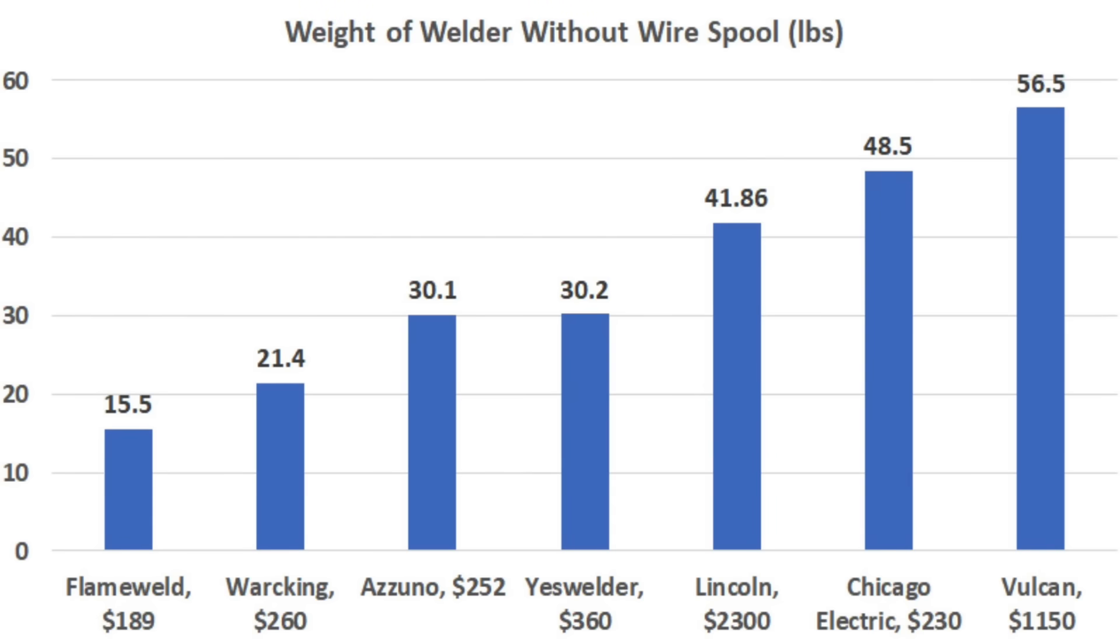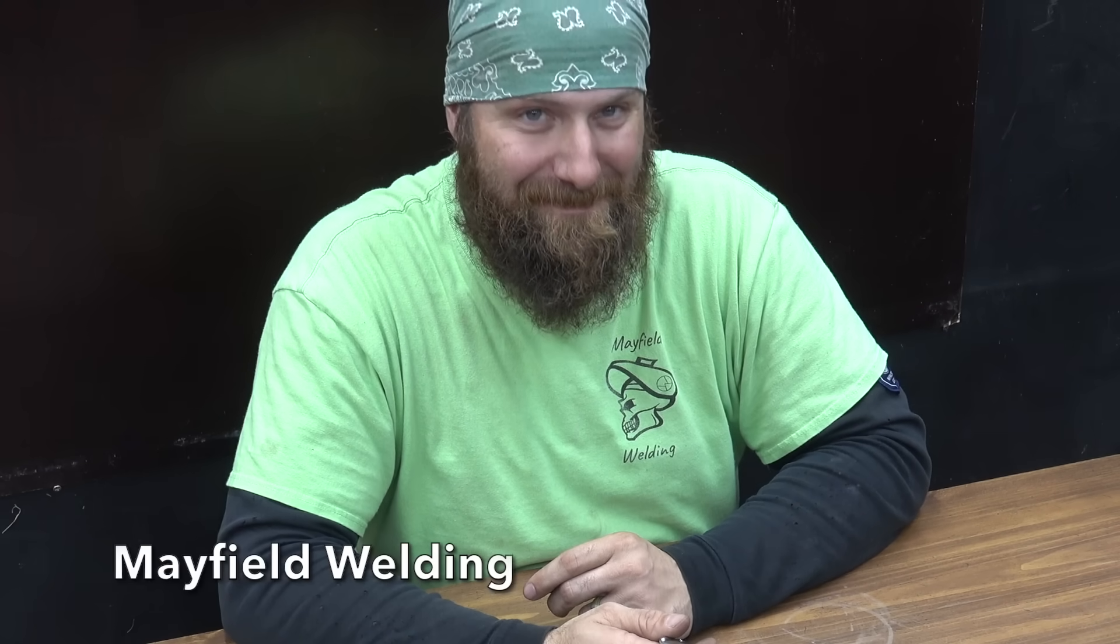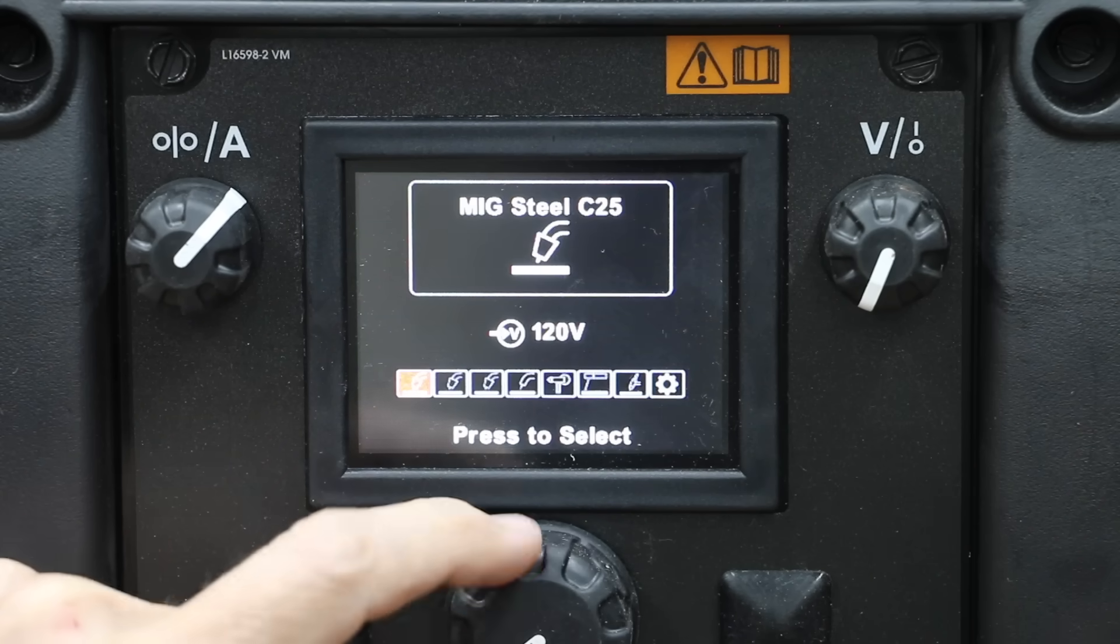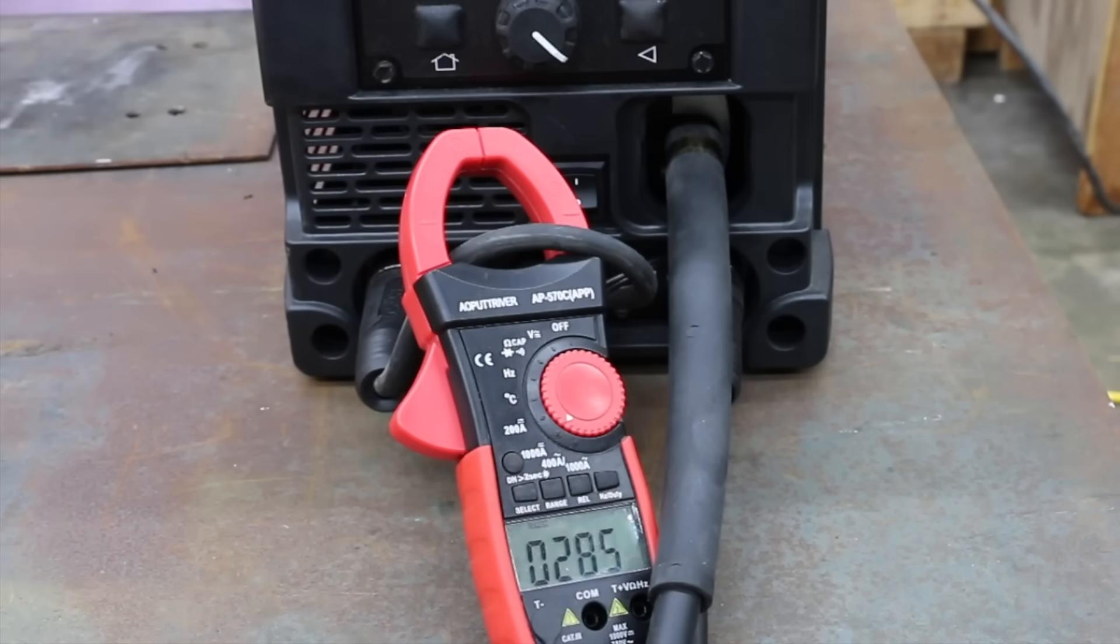And tool weight can sometimes be a factor and the flame weld is the lightest at 15.5 pounds without the welding wire installed. War King weighs 21.4 pounds. Izuno and Yes Welder weigh just over 30 pounds. A big thank you to Virgil for helping me with the MIG welding review. I've set up the test designed for this review to challenge the welding machines and they'll be set up running at a much higher current than normal to compare penetration.